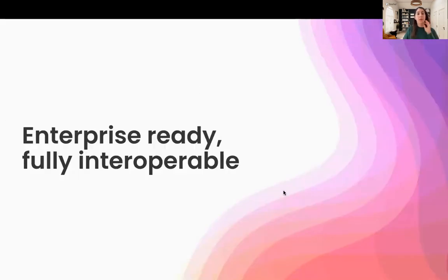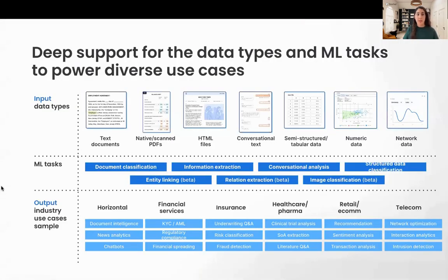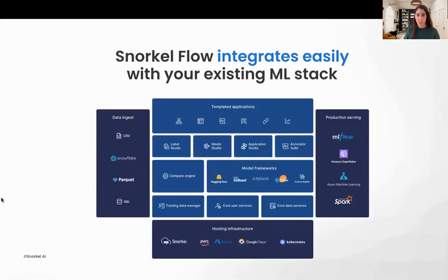Snorkel Flow is also enterprise-ready, fully interoperable, with support for different data types including text documents, native or scanned PDFs, HTML files, conversational text, tabular data, and numeric or network data. ML tasks supported include document classification, information extraction, conversational analysis, and structured data classification, among others. Today our focus is on healthcare and pharma, but we support other industries as well. Snorkel Flow integrates easily with existing ML stacks — data can come in as CSV or Parquet files, with connectors to Snowflake and SQL, and final outputs can be served on MLflow, SageMaker, or other formats. Snorkel Flow can be hosted on our own cloud, your private or public cloud, or on your Kubernetes premises.